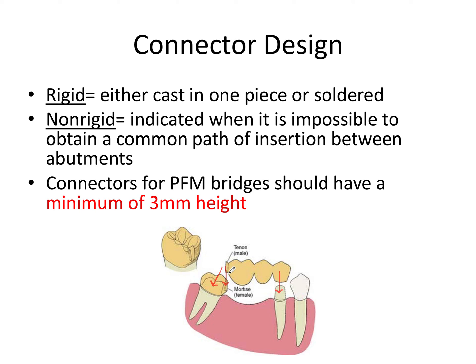As a guideline, connectors for porcelain-fused-to-metal bridges should have a minimum of about three millimeters of height to ensure enough strength so the connector doesn't fracture. If you can afford more than that, increasing the connector height increases strength due to cervical-occlusal reinforcement — meaning the greater the vertical dimension from cervical to occlusal, the less likely the connector is to fracture.